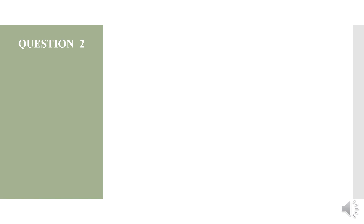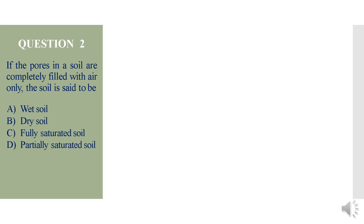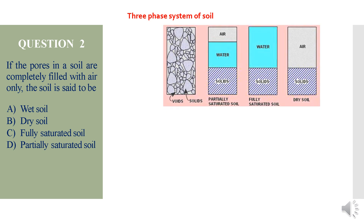Question 2: If the pores in a soil are completely filled with air only, then the soil is said to be — options are wet soil, dry soil, fully saturated soil, or partially saturated soil. This can be well explained with the help of the three-phase system of soil. A soil mass can be considered as a three-phase system.